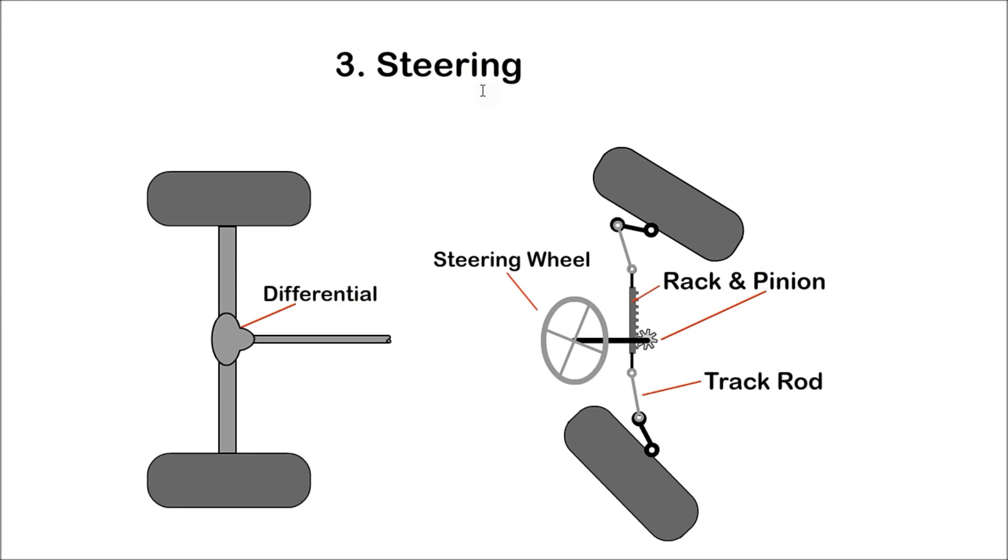Chapter 3: Steering System. The steering wheel is connected to the rack and pinion, which converts steering wheel rotational movement to lateral movement. The final connection to the wheels is made with the track rod and track arms.